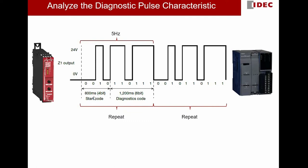If you would like to extract the diagnostic code out of this continuous pulse, there is one very important characteristic we will use in our PLC program: this 6-bit diagnostic code is actually surrounded by two start codes — 0010. So later on in our logic, we will specifically identify this pattern. When we see that within 14 bits the pattern is initiated and ended with 0010, we will take the 6 bits in between.